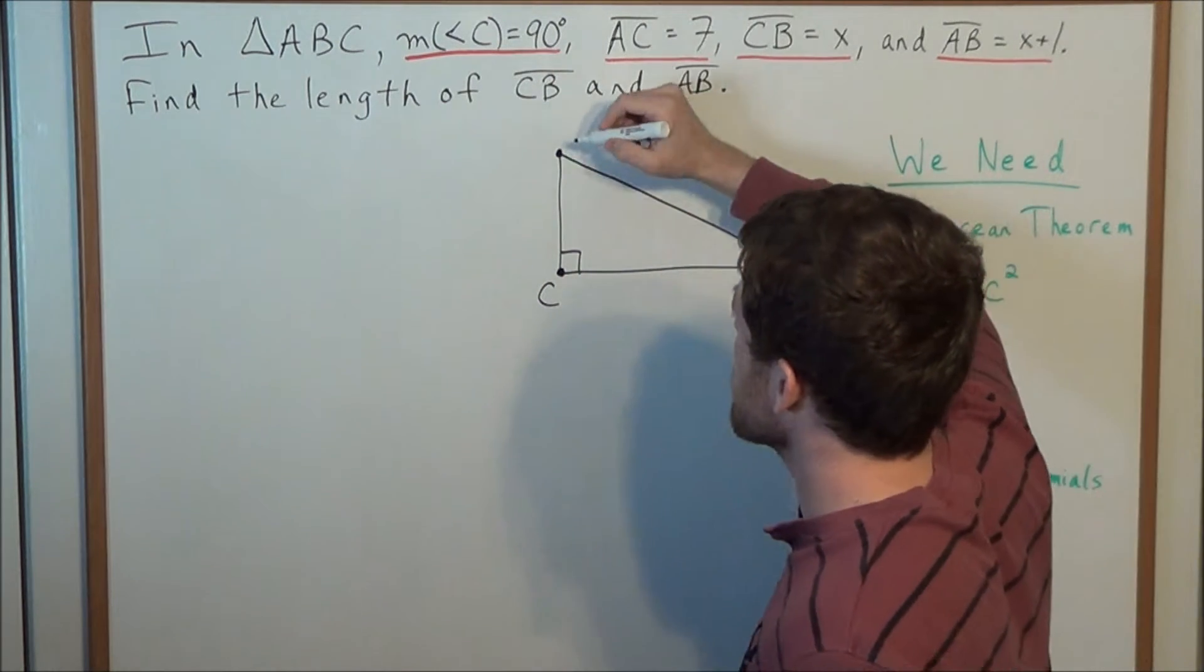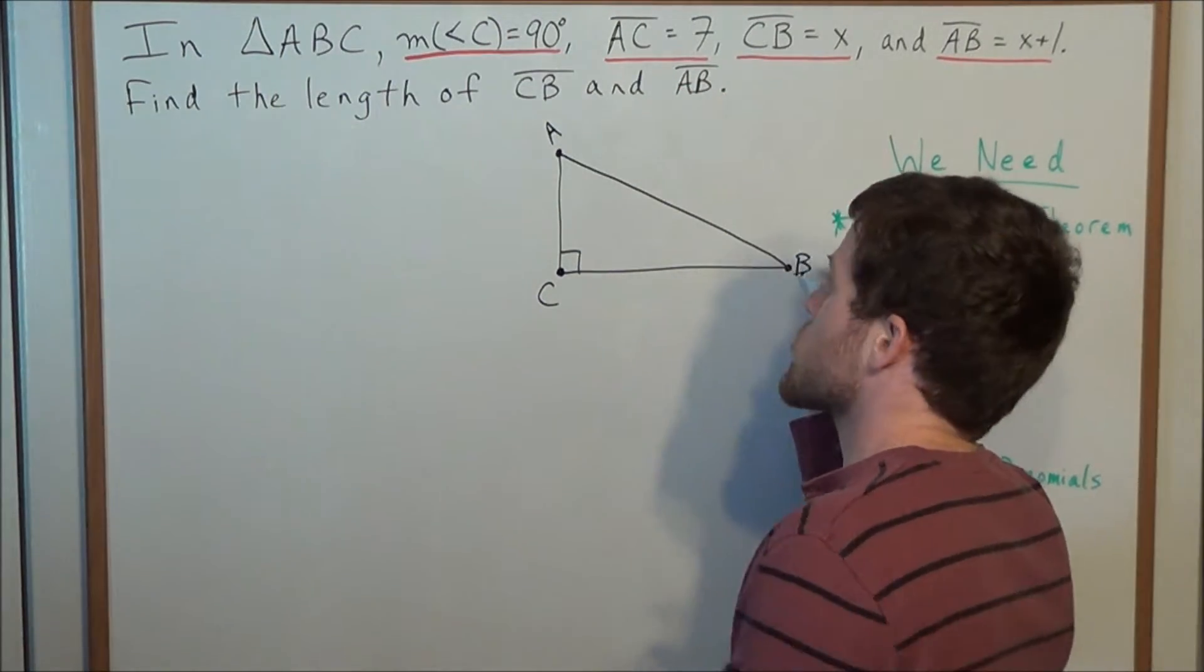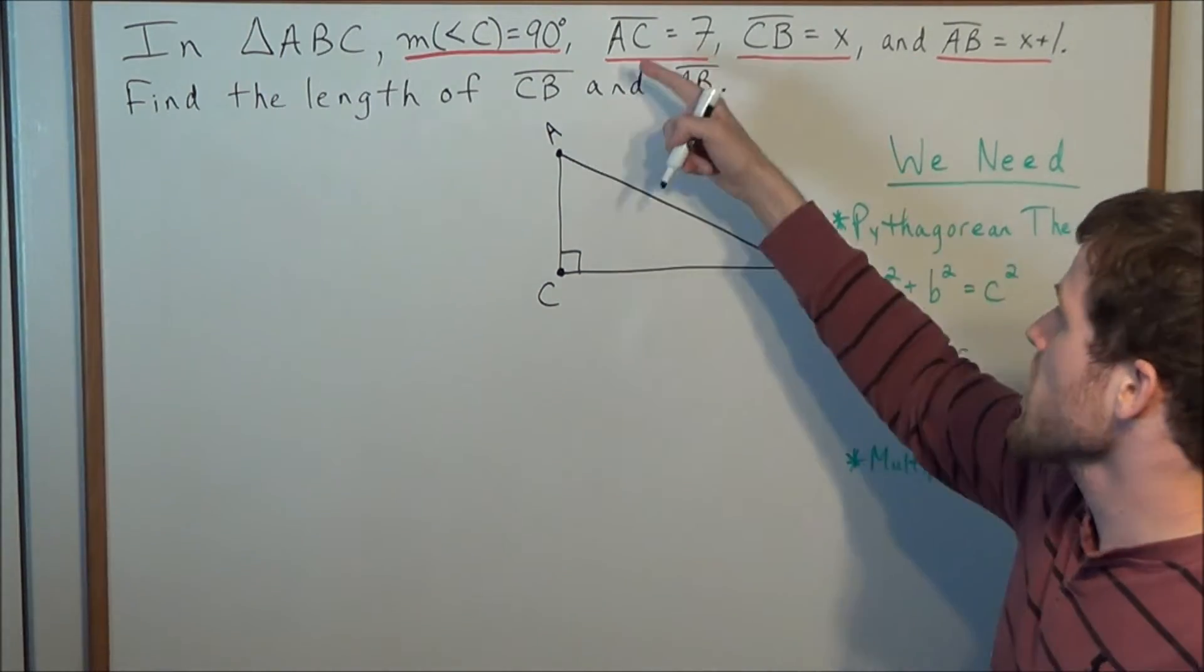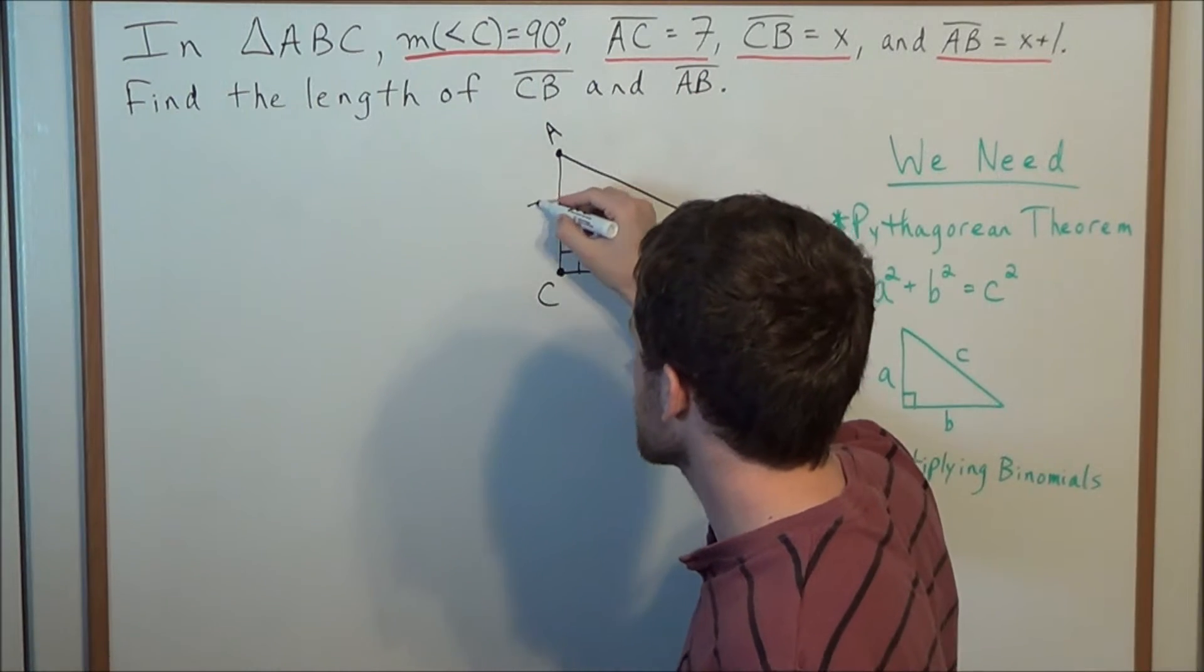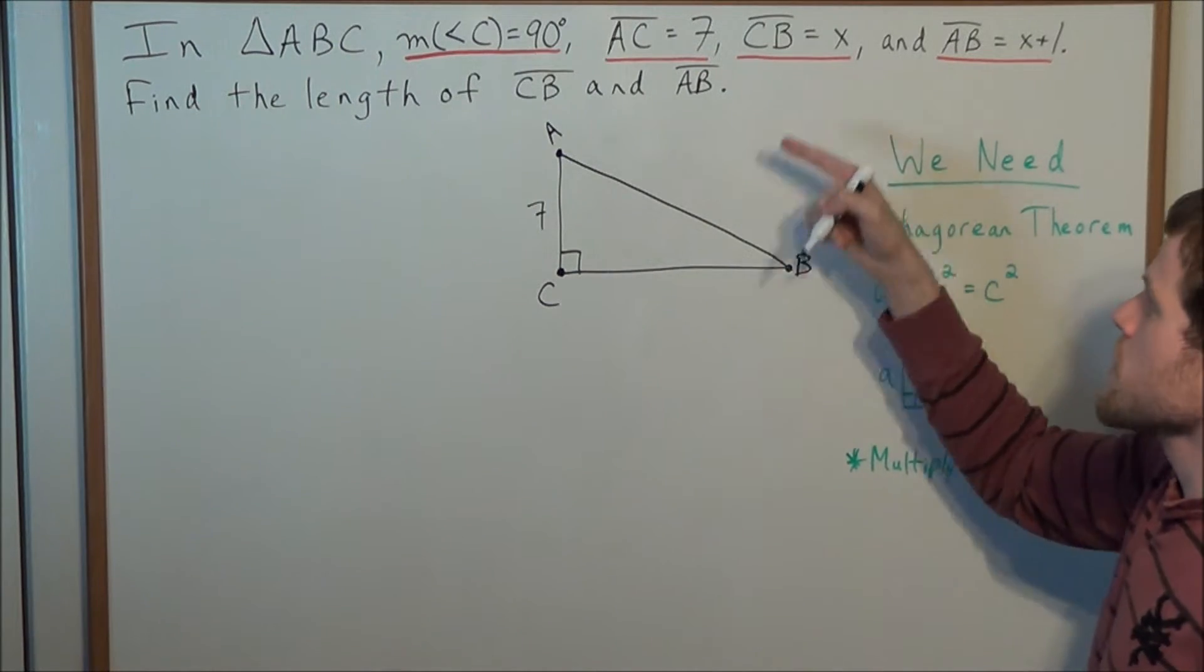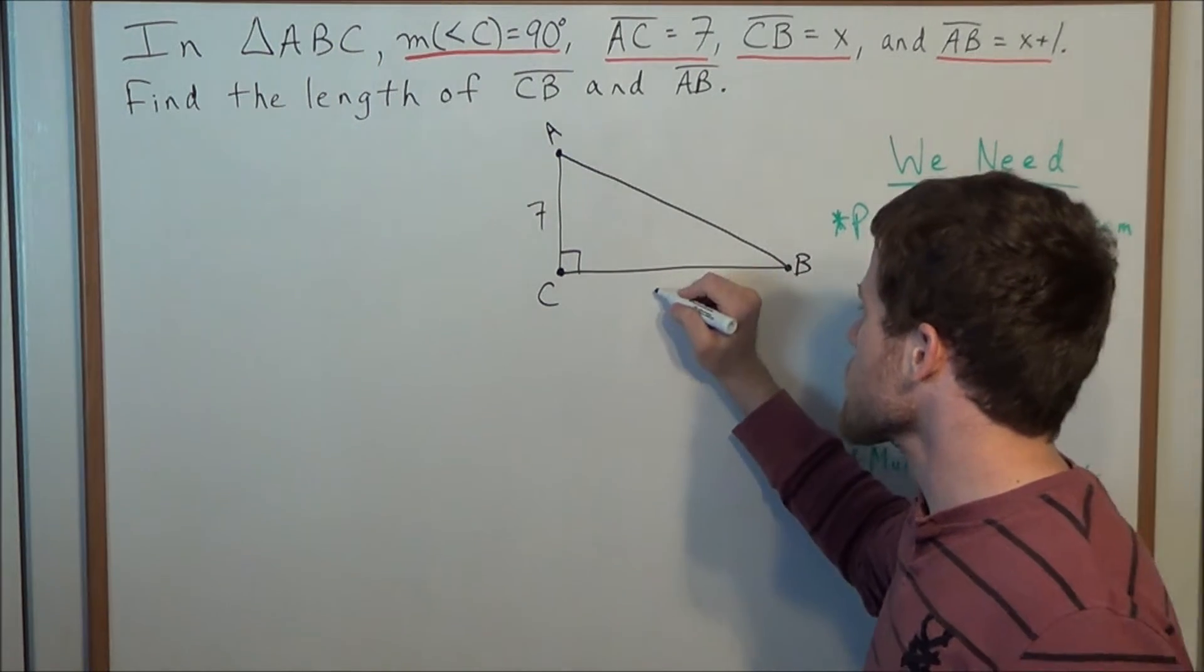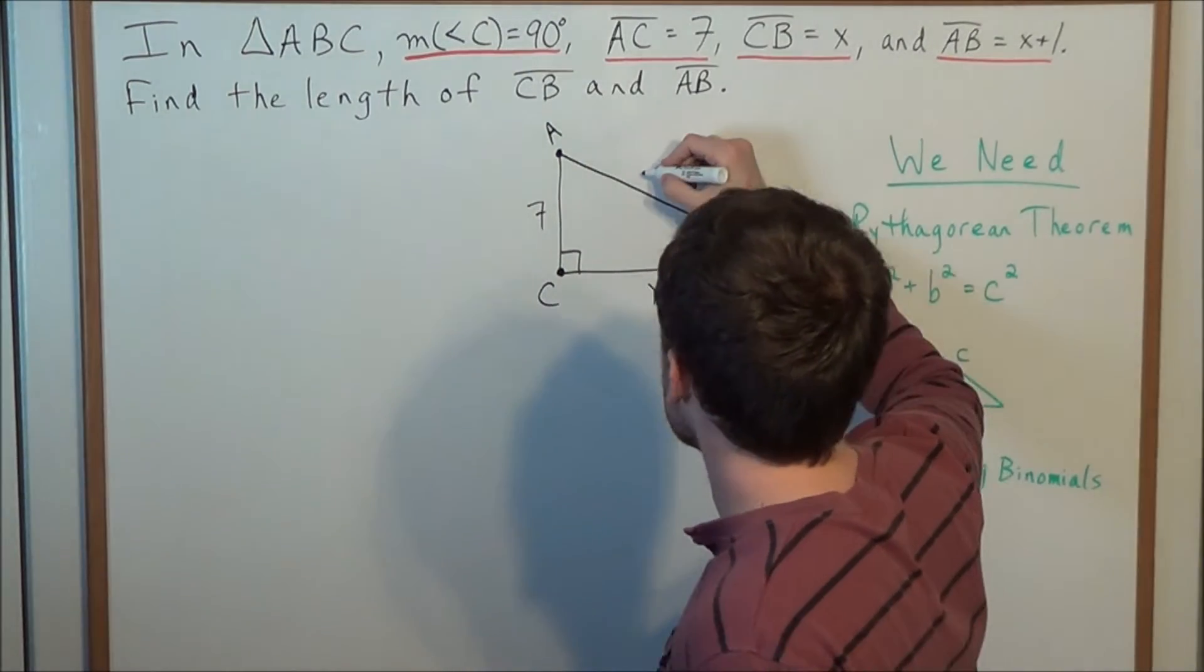So now we can label the other two vertices A and B, since this is triangle ABC. And now we have side AC has a length of 7, so we can fill in 7 along this leg. We have side CB, the length equals X, and we have side AB, the length is X plus 1.